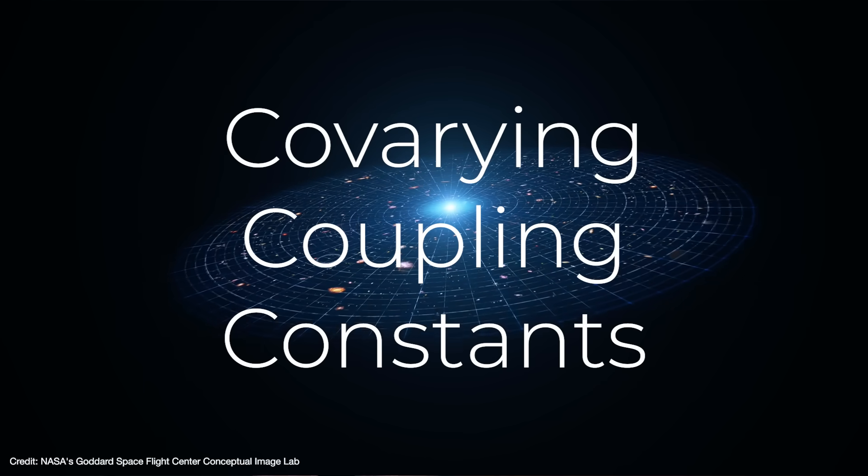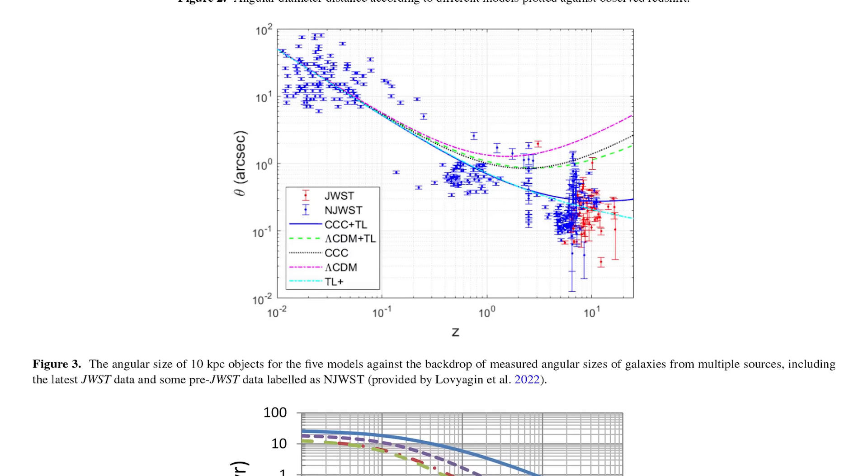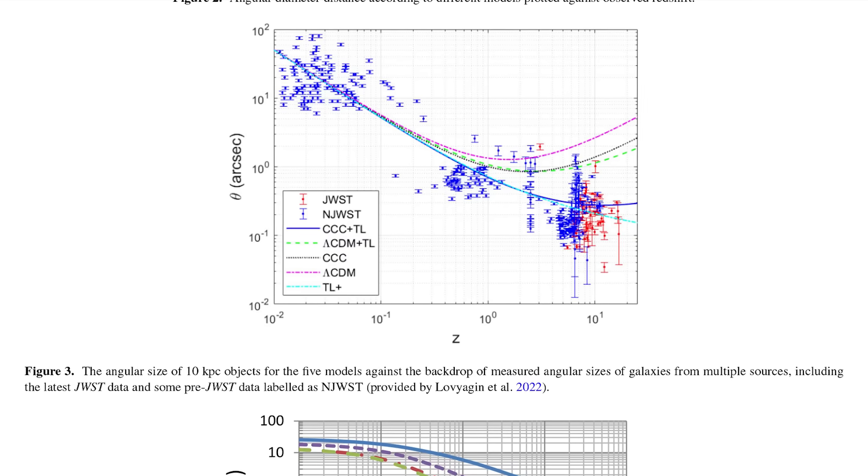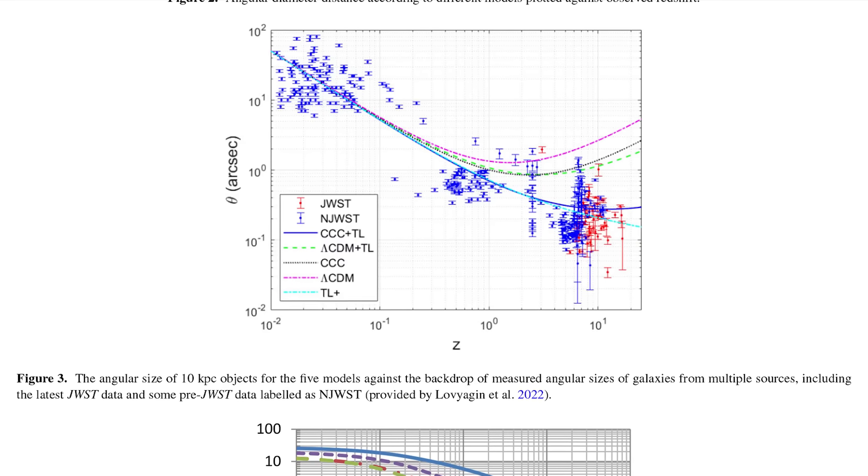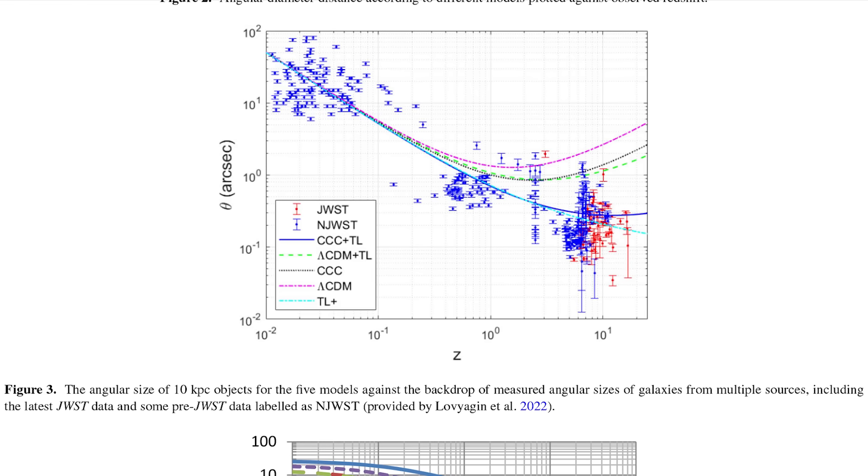The good news is that when these modifications are added to Lambda CDM, it actually fits some of the data even better than Lambda CDM does on its own. But the bad news is that no laboratory test has ever confirmed that constants vary.